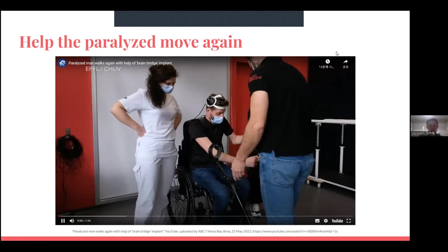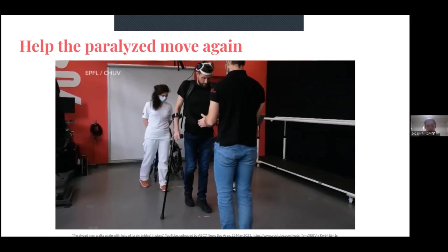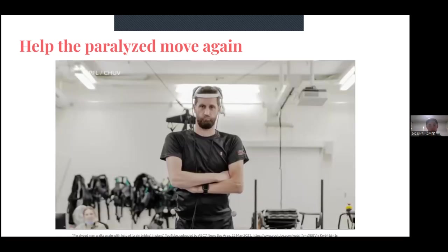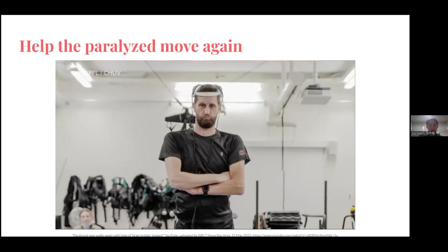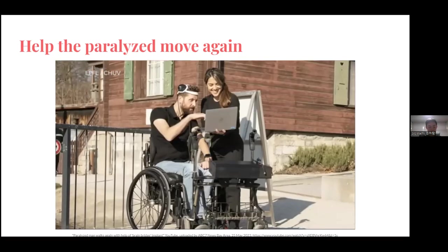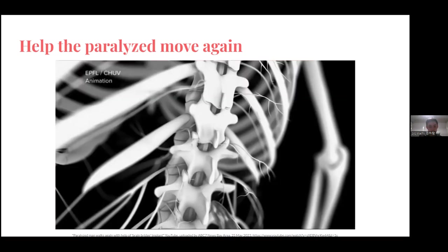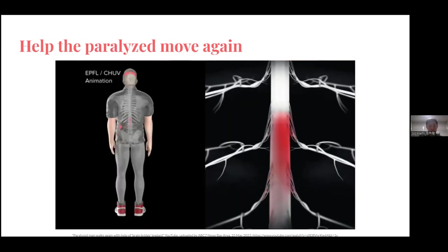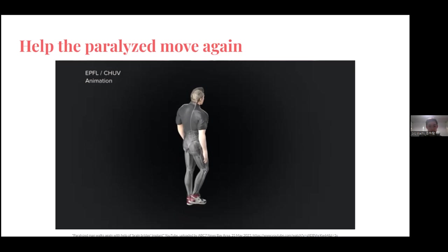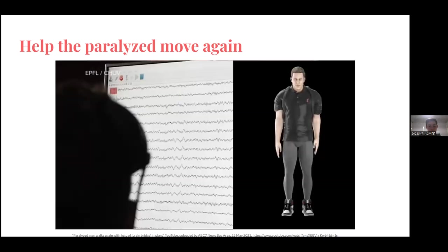Tonight, groundbreaking new technology enabling a paralyzed man to walk again for the first time in more than a decade, thanks to the power of his own thoughts. Kertian Oskam had a spinal cord injury from a motorcycle crash 12 years ago. A year ago, scientists in Switzerland placed electronic implants in areas of his brain and spinal cord that control movement.